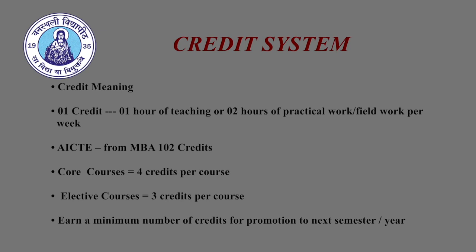AICTE credit requirements for an MBA program are 54 credits of core courses, 42 credits of electives, and six credits for internship or field work. Thus, the minimum number of credits for award of an MBA degree as per AICTE is 102 credits. However, institutes can offer a higher number of credits but not less than 102. Generally in management, it is conventional to assign four credits to core courses and three credits to elective courses. Lower or higher credits may be assigned depending upon the requirement. It is mandatory for all students to earn a minimum number of credits in each semester to move to the next level.